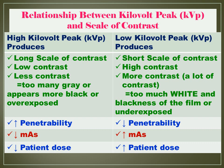The relationship between high KVP, low KVP, and scale of contrast: high kilovolt peak produces a long scale of contrast — low contrast, or less contrast — meaning too many gray shades, or the film appears more black or overexposed, due to increased penetrability. This results in decreased MAS or low MAS.